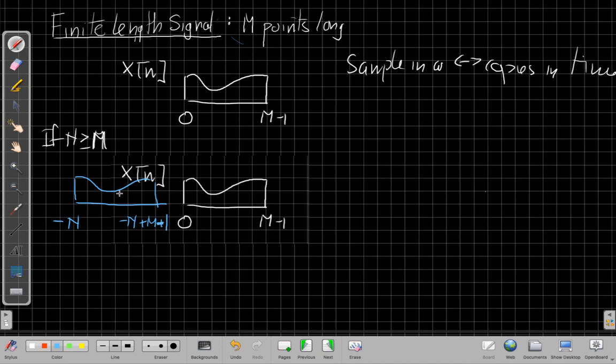And just to keep these sort of clear, we could say there'll be another copy here. They should be more exactly the same if I were a better artist. But the main point is they're not overlapping, and so if n is bigger than m, we have no aliasing in time.